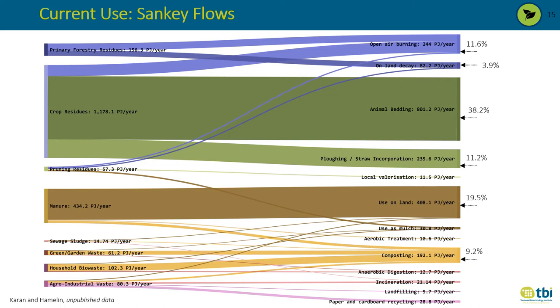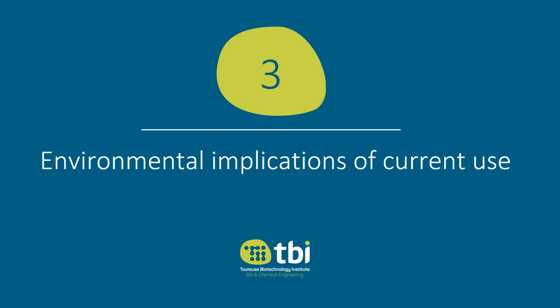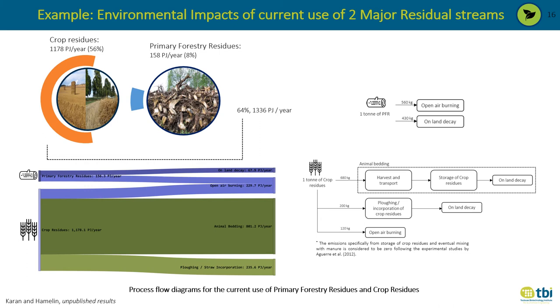Overall, 38% of these residues are used as animal bedding, followed by land application at 19% and open-air burning at 11.6%. Now I will talk about the third and fourth steps of our framework, which deal with the environmental implications of the current use of these resources, giving an example for two major residual streams: crop residues and primary forestry residues, which together represent about 64% of the overall theoretical potential.